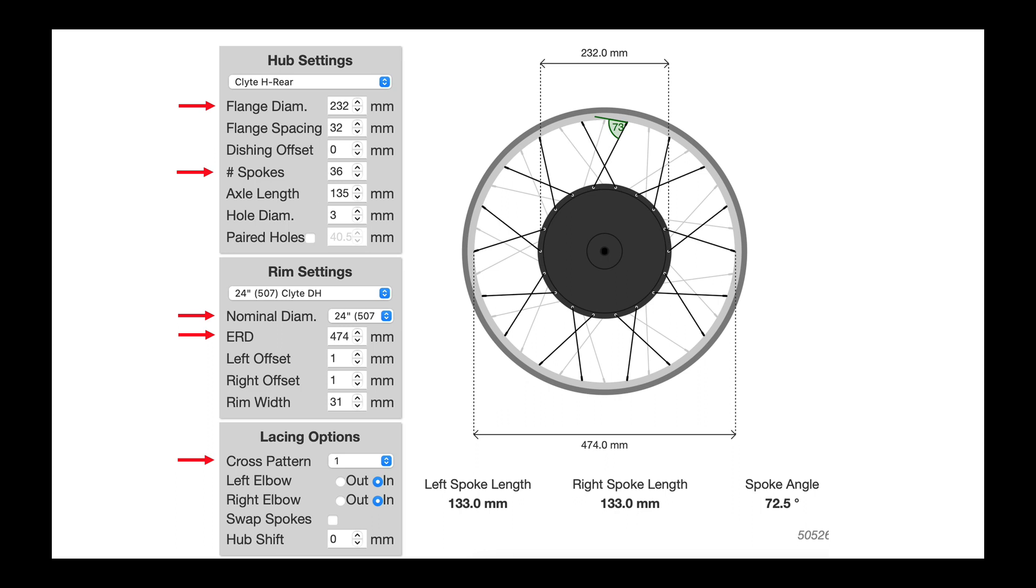So this would be an example of some of the settings. A wheel that has a flange diameter in the hub of 232 millimeters, 36 spokes, a nominal diameter for a 24 inch wheel, an ERD of 474 millimeters, and a cross pattern of one.